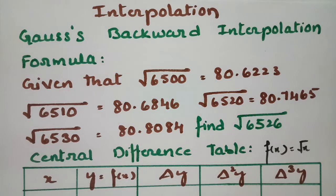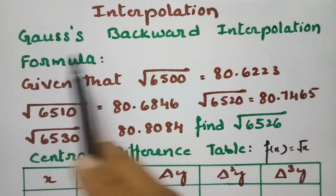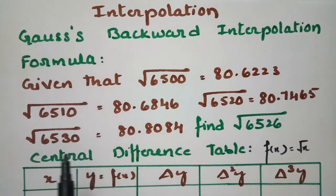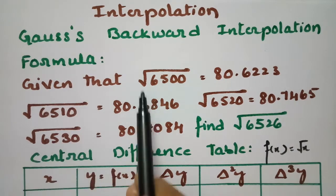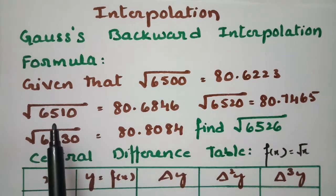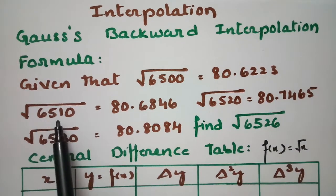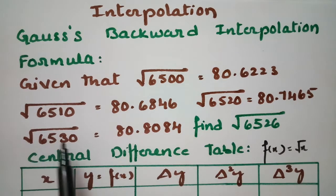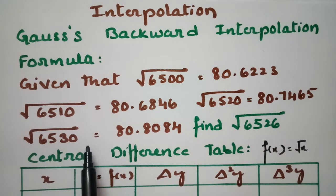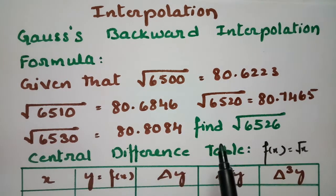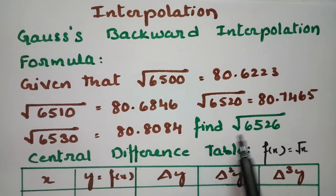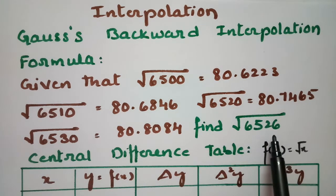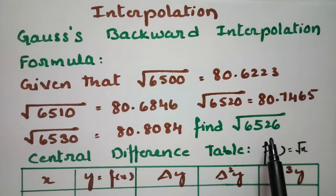Today's topic is interpolation and I am going to solve the problem using Gauss's backward interpolation formula. Given that the values of root over 6500, root over 6510, root over 6520, and root over 6530 are given, we have to find the value of root over 6526 using Gauss's backward interpolation formula.